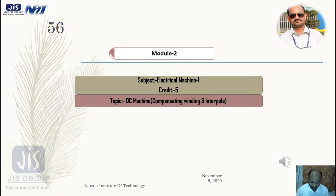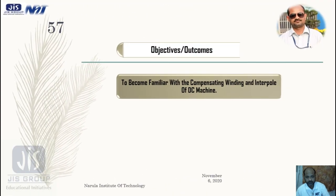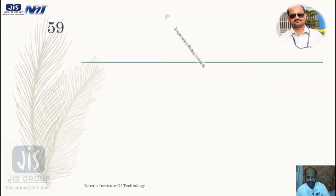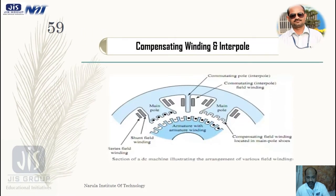We were discussing electrical machine 1 and our topic was DC machine. Today we will discuss compensating winding first and then if time permits we will discuss the interpoles. The objective of today's class is to become familiar with the function of compensating winding and interpoles of DC machine. Let's start lecture number 6 on compensating winding and interpoles.